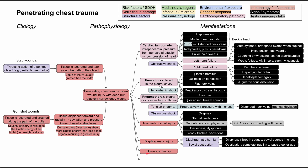The spinal cord runs through the thoracic cavity, so spinal cord injury is possible as well, leading to sensory and/or motor disturbances below the level of the injury. Fractures such as rib fractures or vertebral fractures can also occur, causing pain on pressure, percussion, compression, and inspiration.